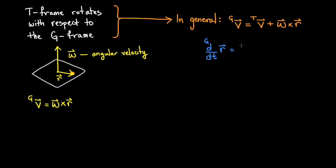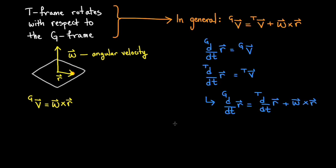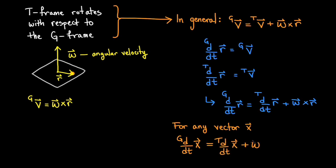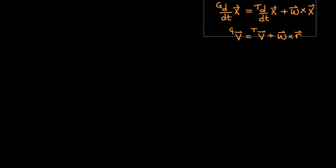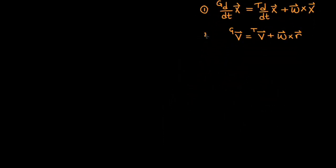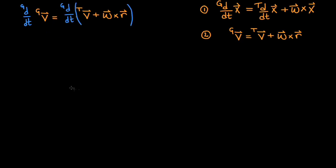We can think of this as a rule for taking the time derivative of the position vector r in both the G and the T frame. We can generalize this formula for how to take the time derivative in the G frame of any vector x in terms of its T frame derivative. This formula holds when the T frame is rotating but not translating with respect to the G frame. Use this formula to take the time derivative of velocity and find the general formula for the acceleration in the G frame in terms of the acceleration in the turntable frame and various other terms. Pause the video while you carry out the computation.